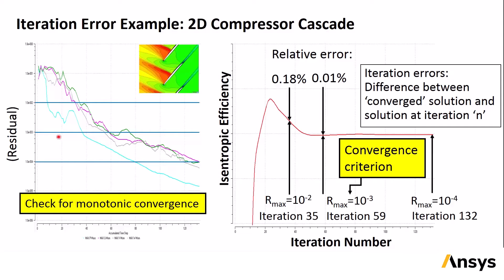We can define iteration error as the difference between the value of the target variable when the solution is converged, and the value at some other iteration, n. The goal is to identify the residual level below which the iteration error is no longer significant, and use that as a convergence criterion for other simulations or similar problems. Here the difference between rmax equals 10 to the minus 3 and rmax equals 10 to the minus 4 is quite small, so we would probably say in this problem we want the residuals to drop to 10 to the minus 3 to ensure that there's no iteration error.